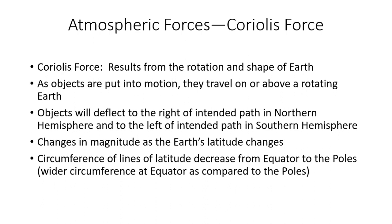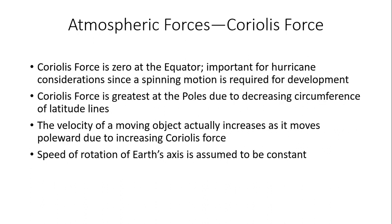The Coriolis force becomes stronger as we head toward the polar areas because the circumference of the lines of latitude decreases from the equator — where the Earth is much wider — to the poles, where the circumference is much smaller. Importantly, the Coriolis force is zero at the equator. This matters for hurricane development, since a spinning motion is required for tropical depressions, tropical storms, or hurricanes. Right at the equator, that twisting Coriolis motion is non-existent, and therefore we will never see tropical cyclones developing directly on the equator.